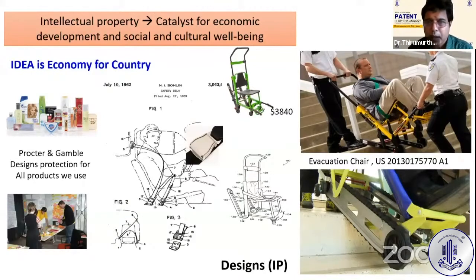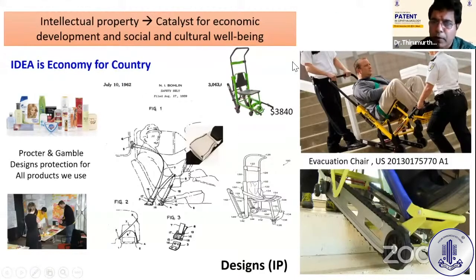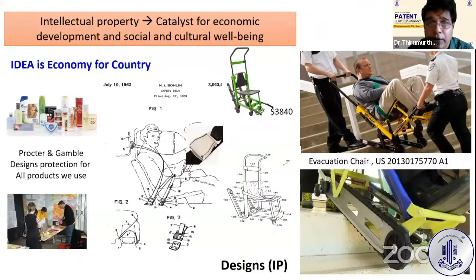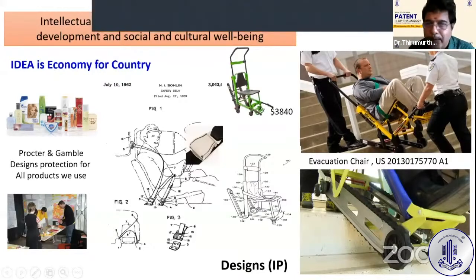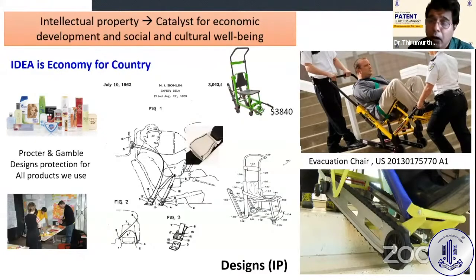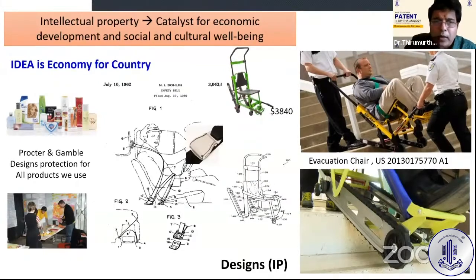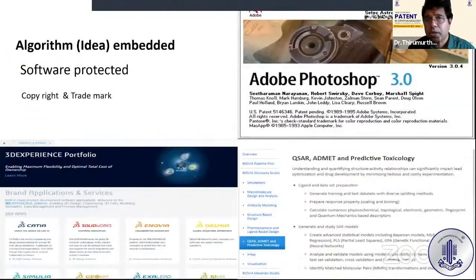An evacuation chair — a simple chair with a belt roller on the bottom — was designed to bring patients through staircases during emergencies like fires. This evacuation chair is a patent of the company Stryker and is sold for $3,840. Similarly, the small buckle used in aeroplanes also has a patent on it. Whatever you think of when simplifying a process, you see innovation — and there is a patent.